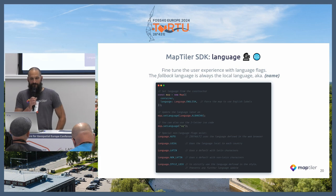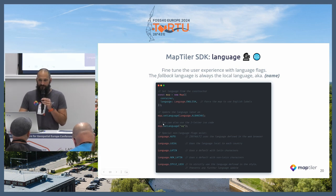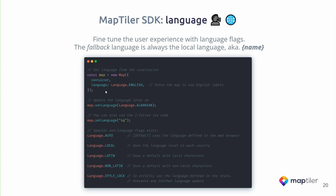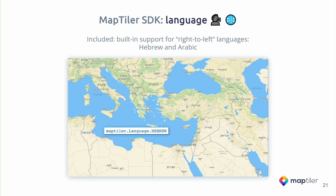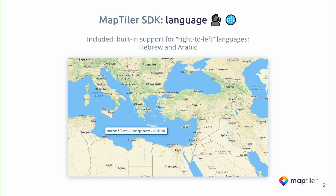Another feature is language switching. You can set the default language the application will use at start. Later, you can also switch the language to, for example, Albanian, or use a common ISO shortcut. There is a set of flags which can be used as well, so the map really behaves the way you want for a particular user in a particular region. The result is that the map can change its label language dynamically, directly in the web browser.